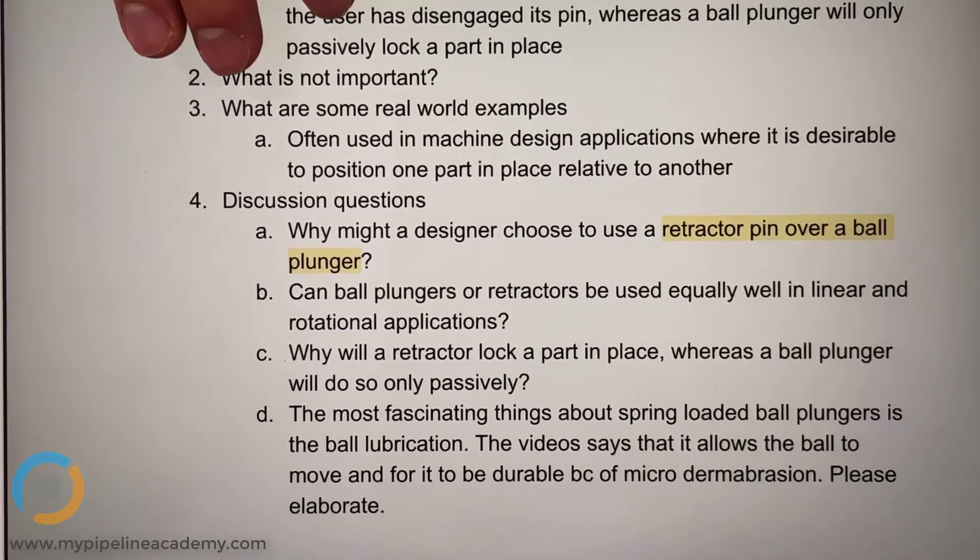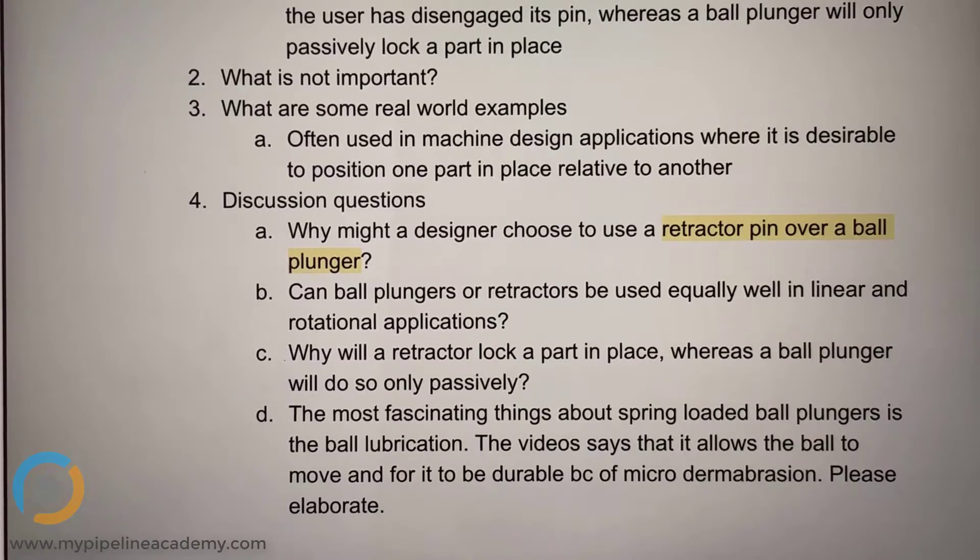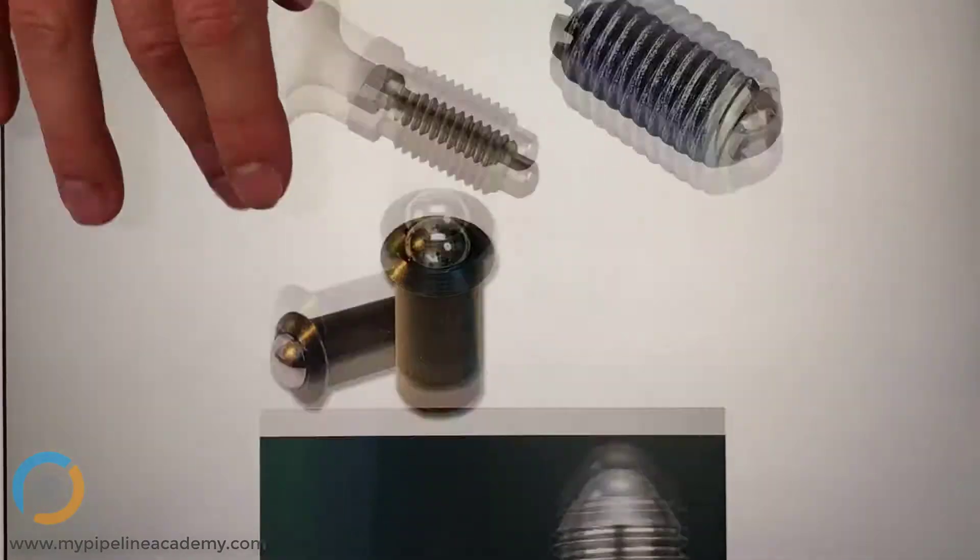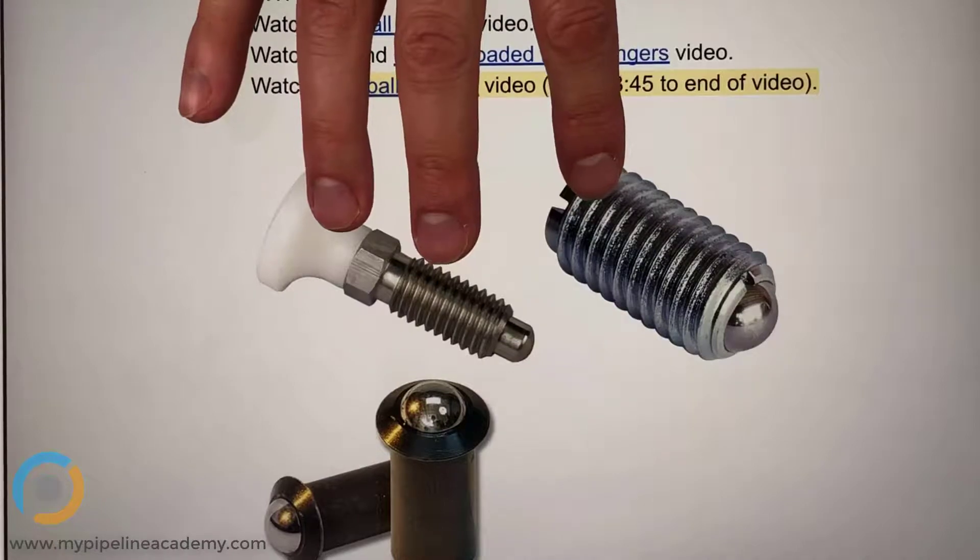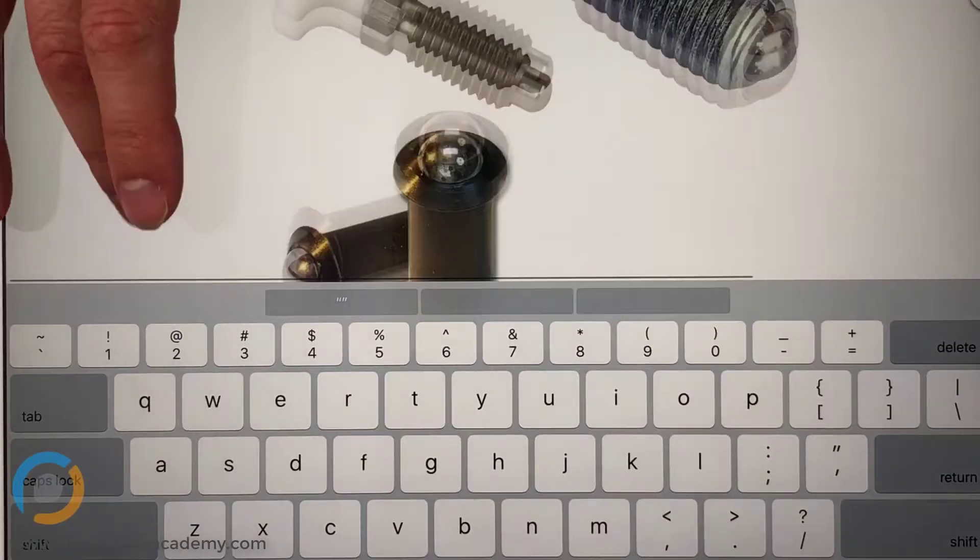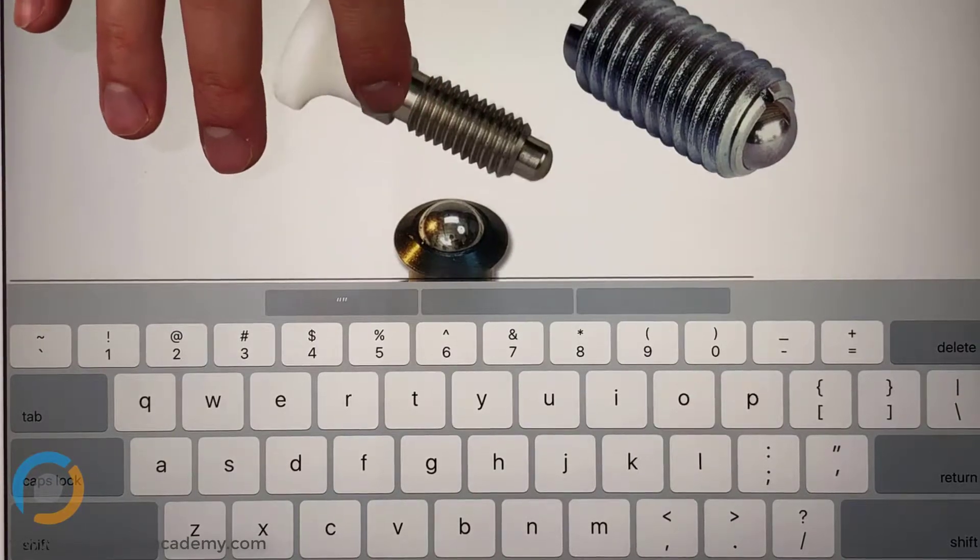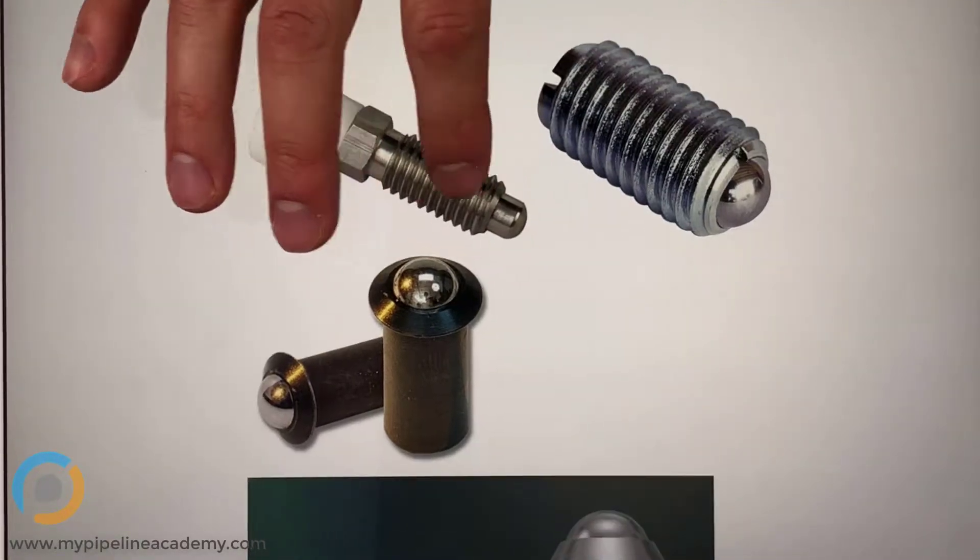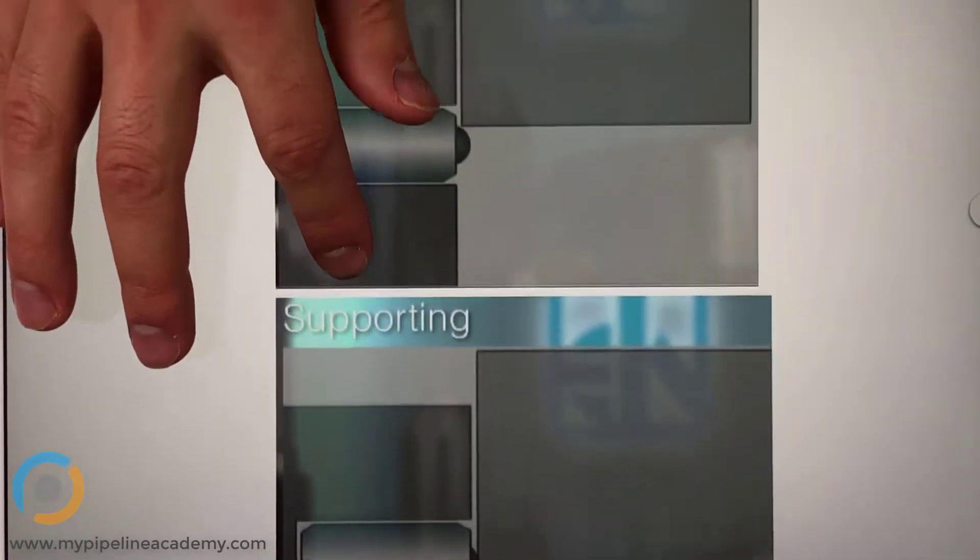I'm going to this question here. Why might a designer choose to use a retractor pin over a ball plunger? I'm thinking. So use a retractor pin over a ball plunger. In the examples that I saw in the YouTube videos, we didn't go over any of these. I don't recall using this for any examples. So I don't know why one or the other, but this one would not work.